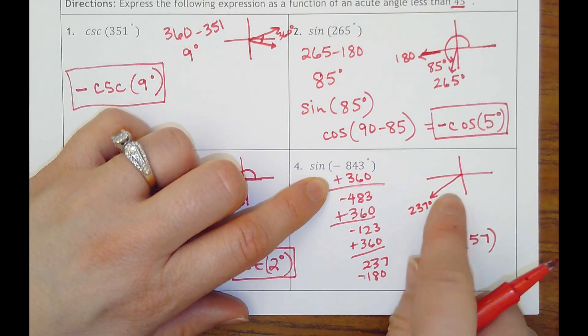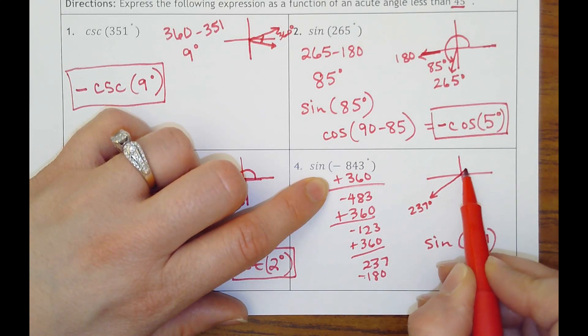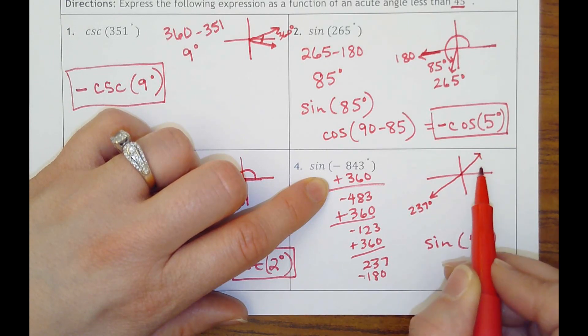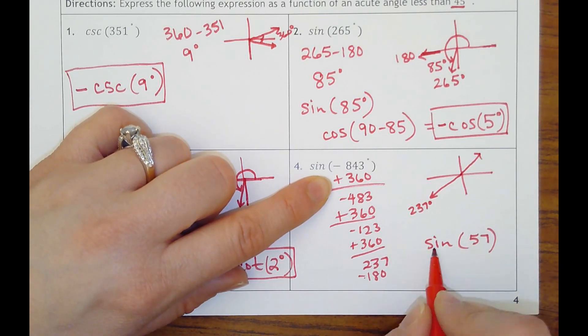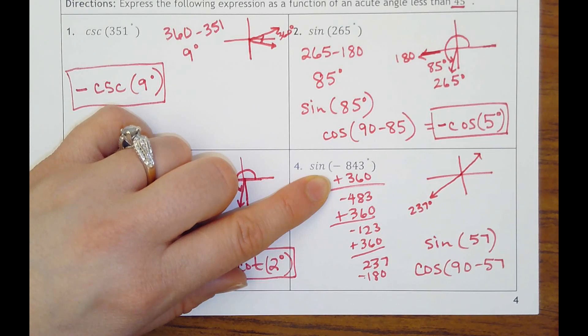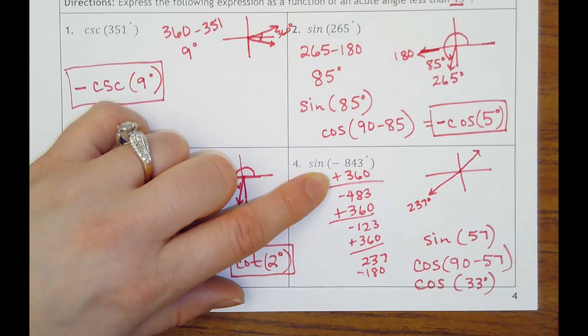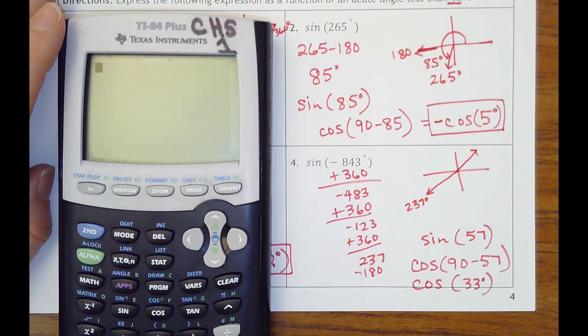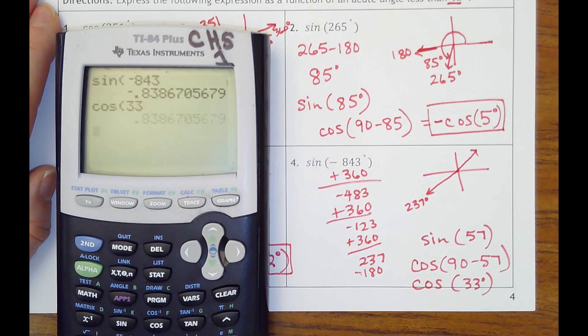But I'm here in quadrant three where sine is negative. The sine of 57 puts me in quadrant one, which is going to be positive. So I know I'm going to have to make this a negative, but I'll just do it here at the end. So then this is still bigger than 45. I want to make it its co-function. So I'll do cosine of 90 minus 57, which is 33. And I would just check it. So let's do sine of negative 843. See how that's negative? So if I do cosine of 33, it's of course positive because it's in quadrant one. So I need to make it be negative so that it matches.